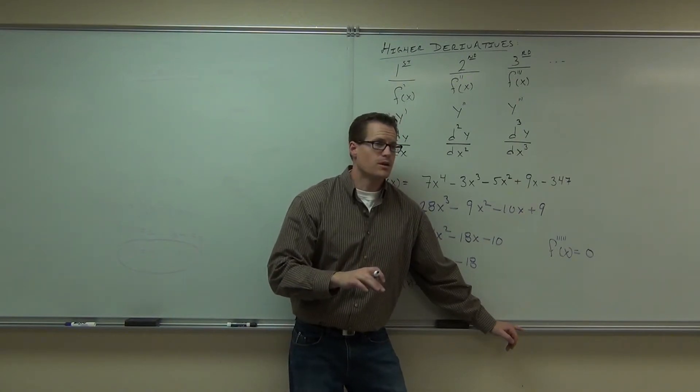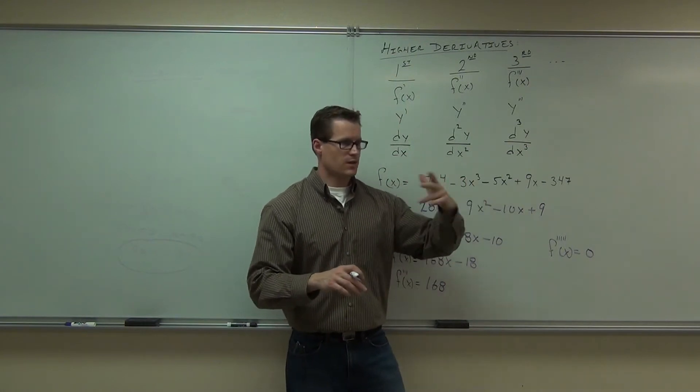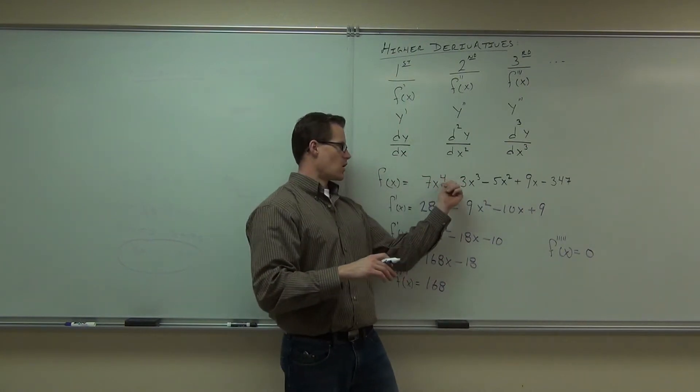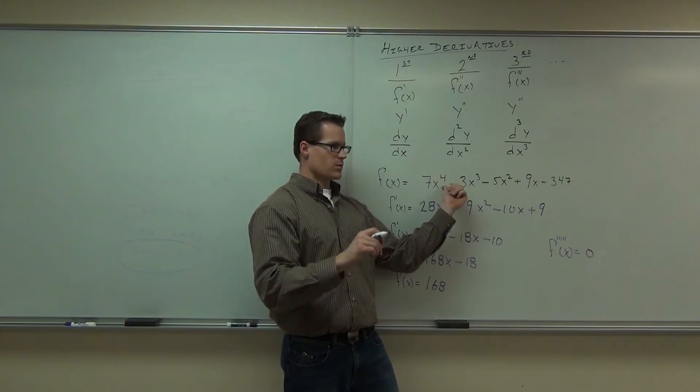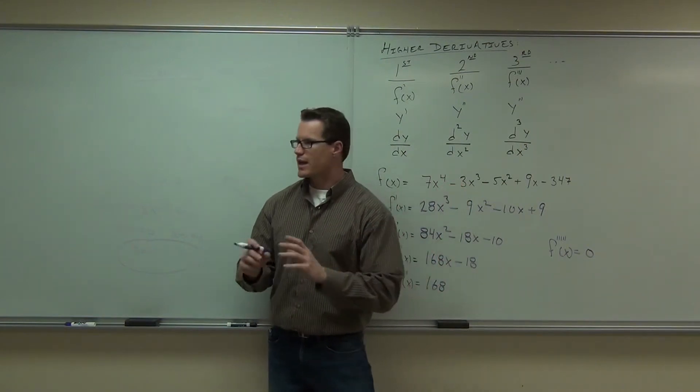This is going to happen for every polynomial. You see, at some point, no matter what you start with, if it's a polynomial, you'll be able to take a derivative, and what happens every time is the order of the polynomial decreases by one. So four, three, two, one, zero, and then a constant. So that's going to happen with polynomials.